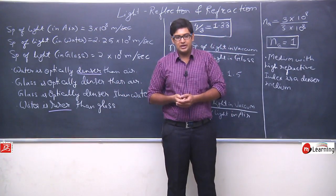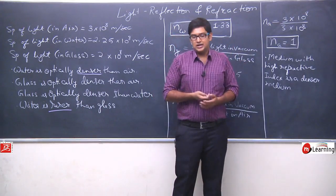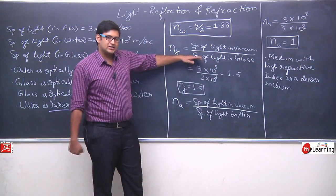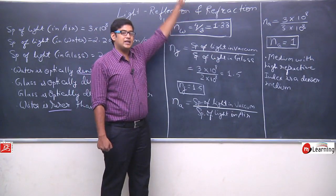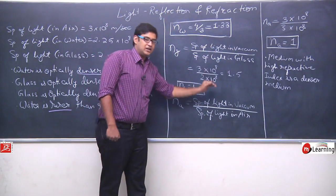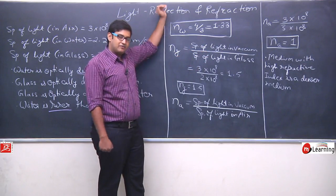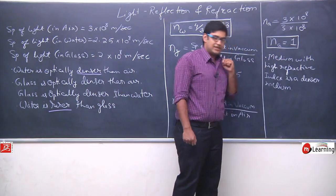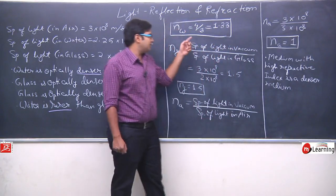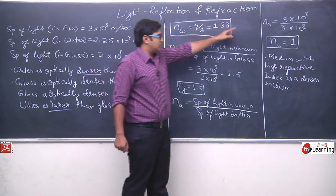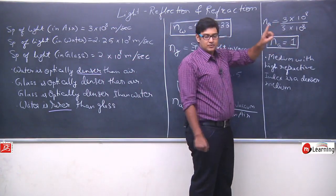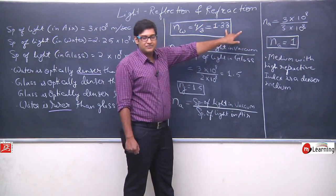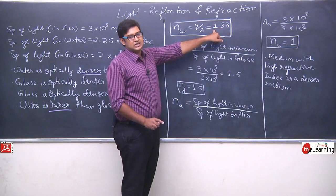Speed of light in vacuum toh constant hai. Matlab jitni zyada speed of light in a medium hogi, utna refractive index kam hoga; jitni zyada speed kam hogi, utna refractive index badhega. Medium with high refractive index is a denser medium. Agar hum compare karein — water ka refractive index is 1.33 and air ka refractive index is 1 — so obviously water denser hua, kyunki water ka refractive index zyada hai. On the basis of refractive index, I can say water is denser than air.